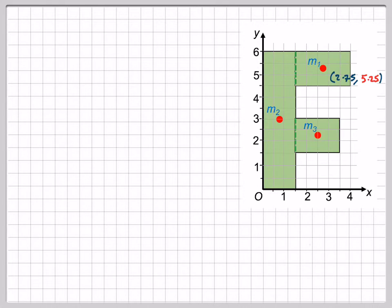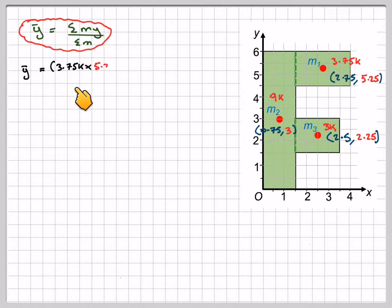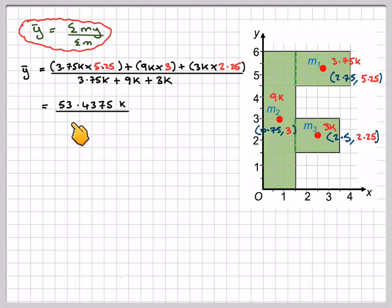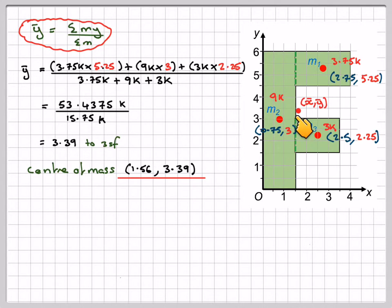Similarly to do the y coordinates. This time I'm writing the y coordinates in red. y bar is the sum of sigma my over m. So we're taking moments about y this time, reminding ourselves of the masses of each of these. So that's going to be 3.75k times the y distance, plus 9k times 3, which is the y distance here, plus 3k times 2.25, which is the y distance here, divided by the total masses, 3.75k plus 9k plus 3k. That gives me 53.4375k divided by 15.75. This should be 15.75k. The k's will cancel out. That gives me 3.39. Therefore, the center of mass x is 1.56, 3.39, which is approximately about there on my diagram, slightly off the shape.